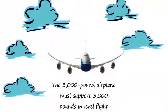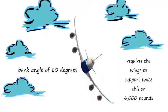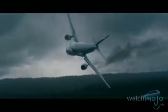For example, the wings of a 3,000-pound airplane must support 3,000 pounds in level flight. But when the airplane is turned smoothly and sharply using a bank angle of 60 degrees, the dynamic load requires the wings to support twice this, or 6,000 pounds. Severe uncoordinated maneuvers or flight into turbulence can impose dynamic loads on the structure great enough to cause failure.